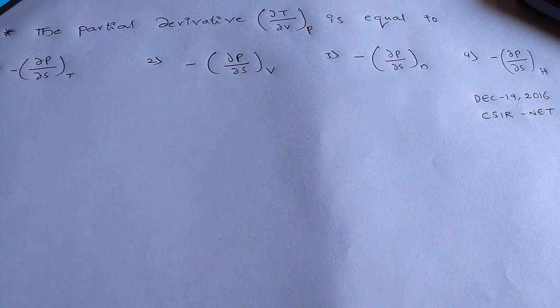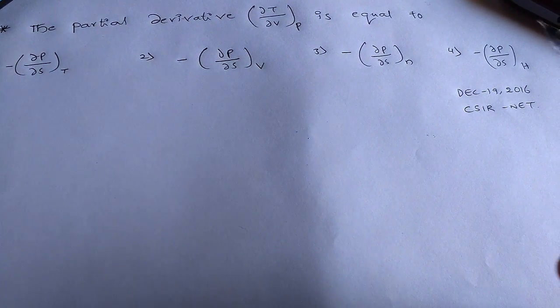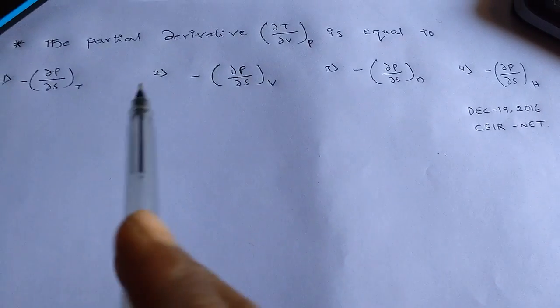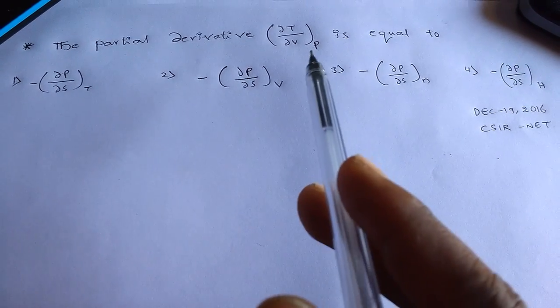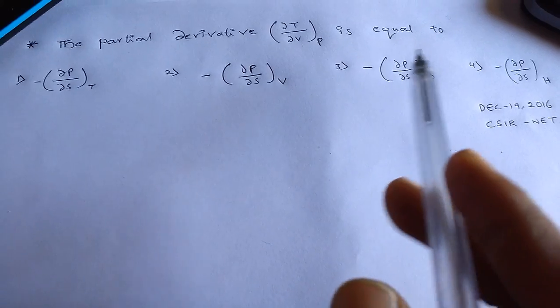Hi, this is 7GV. This question appeared in December 19, 2016, CSIR net. The question is, the partial derivative dou T by dou V P is equal to,